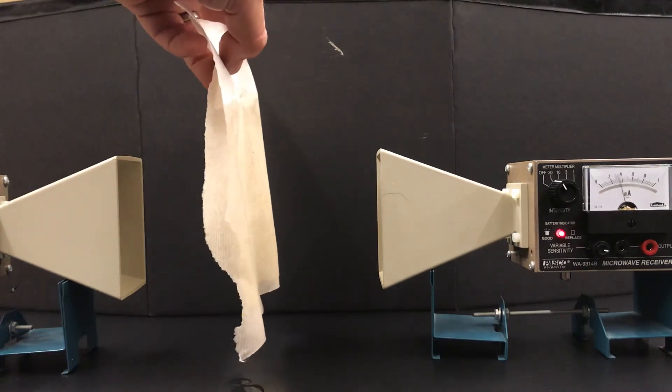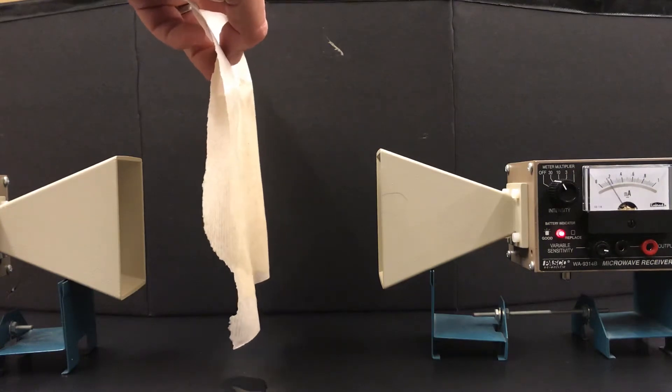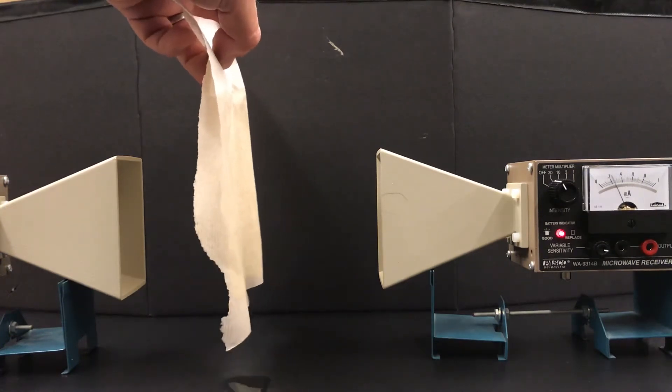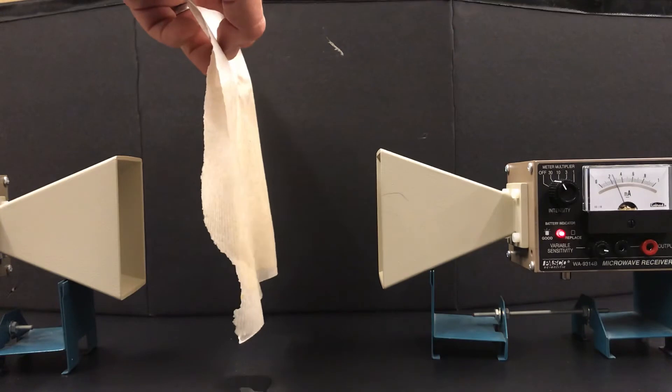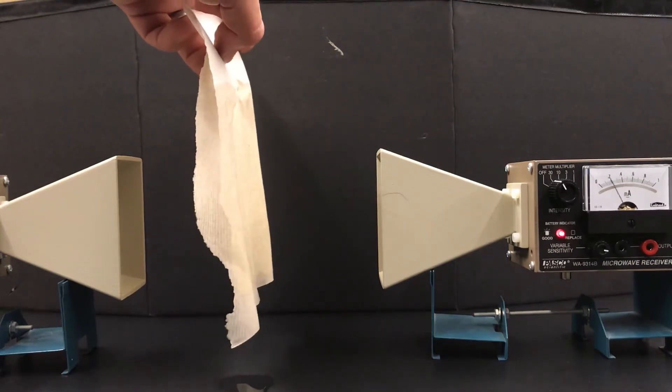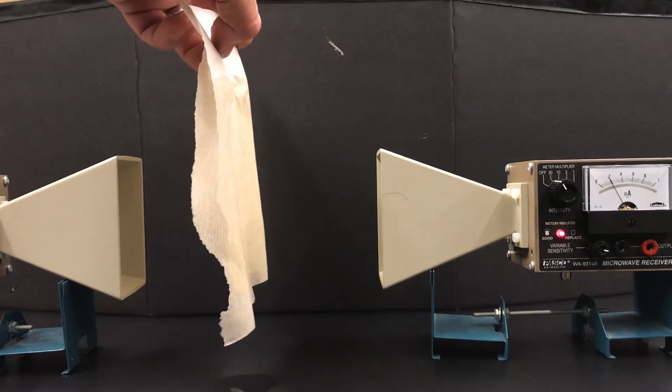You can see there's a little bit getting through but the needle's a lot lower than it was, it's kind of bouncing around. So the thin layer of water in the paper towel is enough to absorb a lot of microwaves.